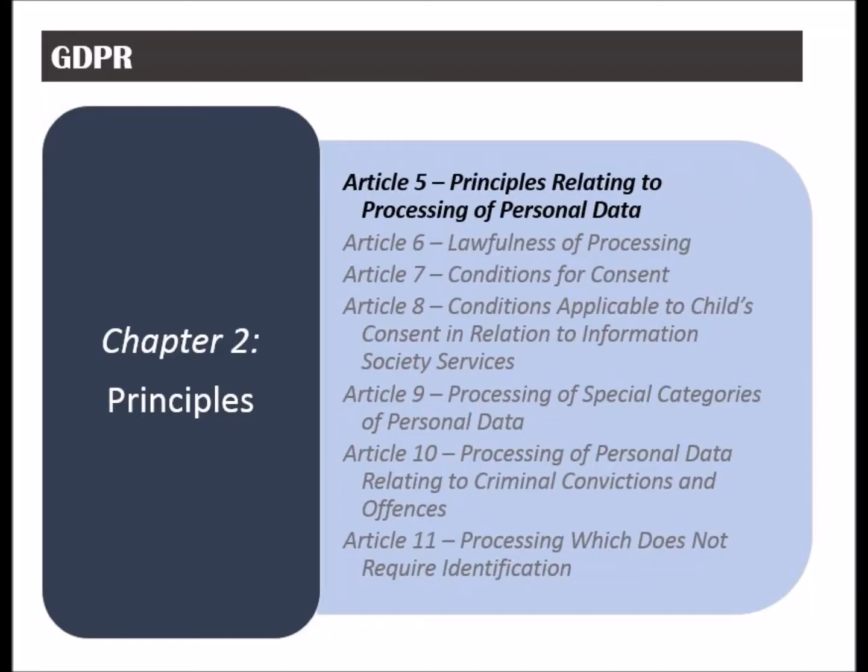The second chapter of the General Data Protection Regulation is called Principles. It has 11 articles, and its purpose is to define the conditions and rules for processing of personal data.